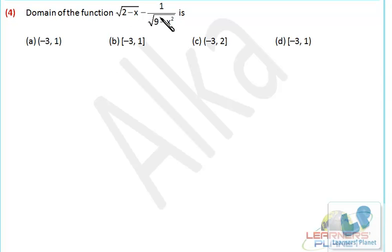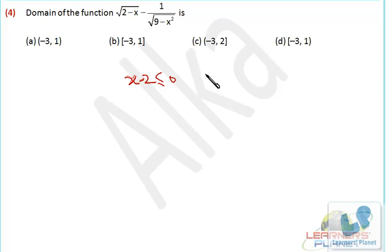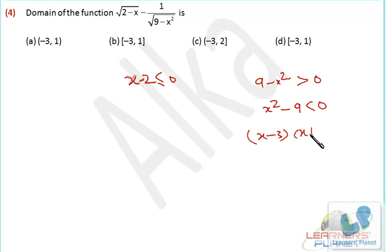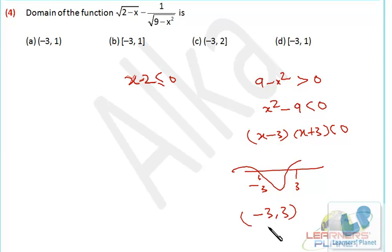Now this problem — domain of this function — once again there are two expressions to consider. First, 2 minus x should be greater than or equal to 0, meaning x minus 2 should be less than or equal to 0. Apart from that, 9 minus x squared is in the denominator as well as under the square root, so 9 minus x squared should be greater than 0 — not equal to, only greater than 0. That means x squared minus 9 should be less than 0, so x minus 3 times x plus 3 less than 0, giving x between minus 3 and 3.